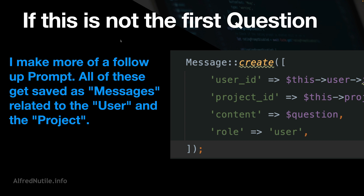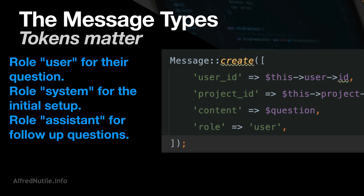If this is not the first question, we have to get all the saved messages. I'm saving messages to a database table called 'message,' tracking who it belongs to, what project it belongs to, the content of the question, and what role it is — user, system (first question), or assistant (a corresponding response). At that point we can take the message history, output and sort them, and continue with the chat.